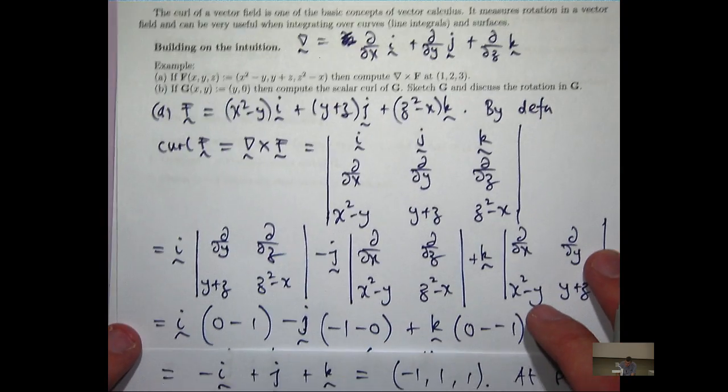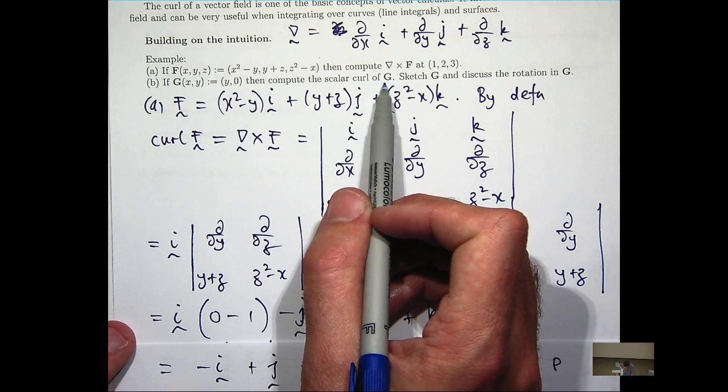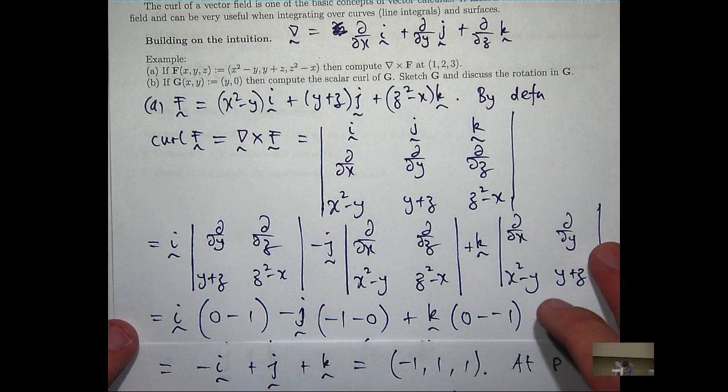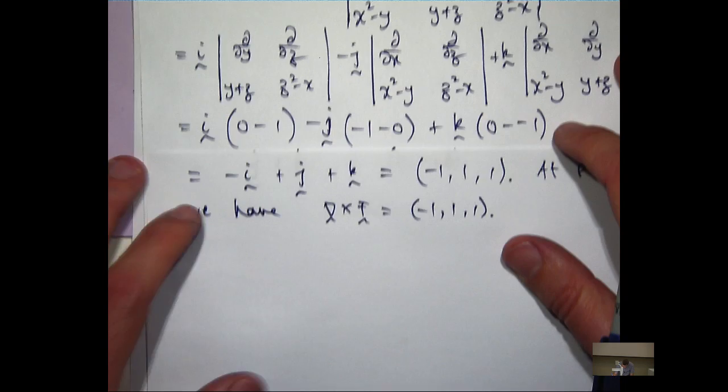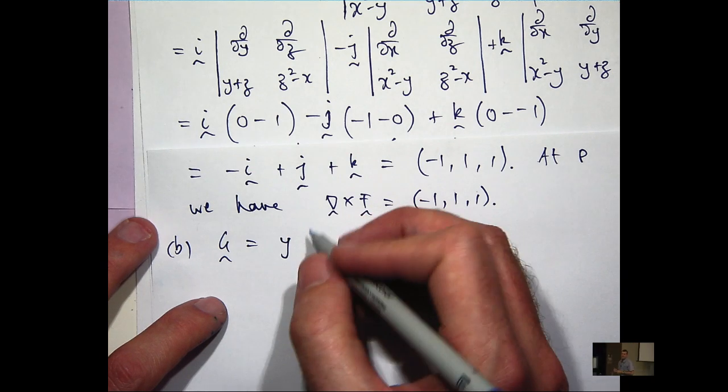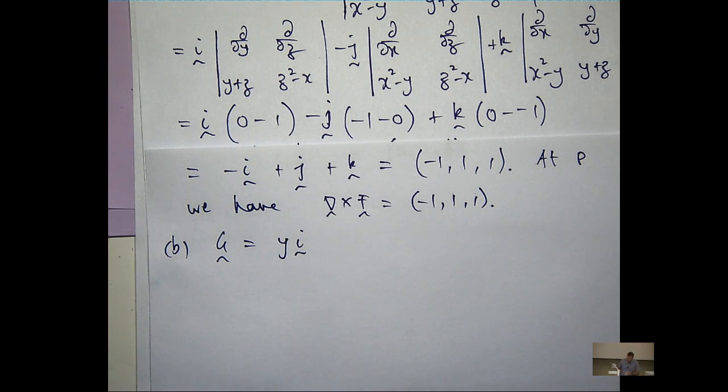Now for part b, we've got a vector field in the plane. Compute the scalar curl and sketch some vectors associated with g in a plane and discuss the rotation. Here g in i, j, k notation is just this. So we would expect all the vectors for our vector field to be horizontal. And if y is positive, they'll point a certain direction. If y is negative, they'll point the opposite direction. And as y increases, the vectors from our vector field will increase in magnitude.